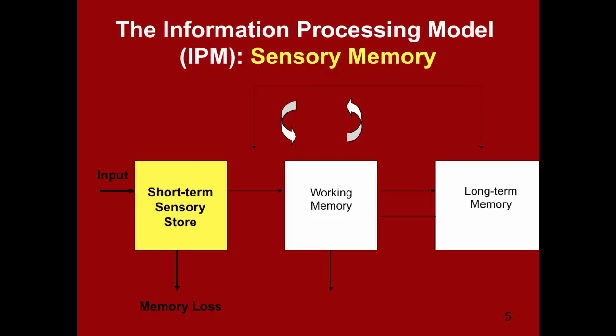The first component in the information processing model is the short-term sensory store, also referred to as sensory memory or sensory register. This is where all of the information first enters our mind — all of the sensory information that we're receiving from our environment. What kind of input comes in? Think about your senses. How many senses do you have? You might say five, but depending on the theorist, there can be anywhere from 10 to even upwards of 20 different senses. We know the basic five: sight, hearing, smell, taste, and touch.